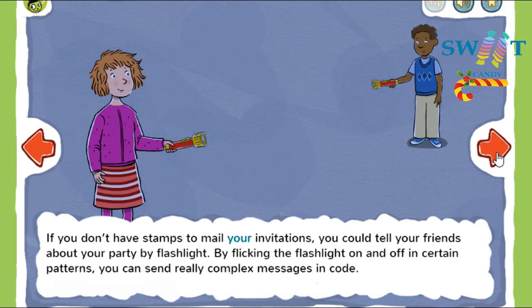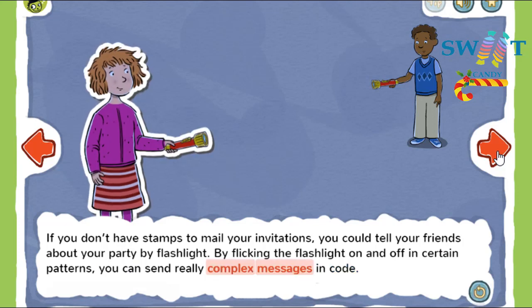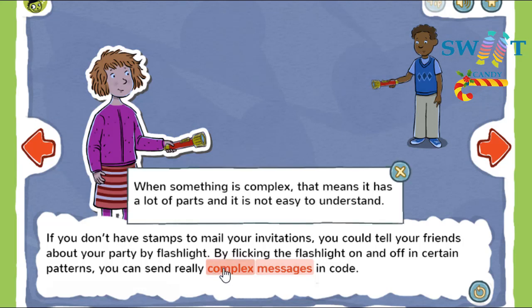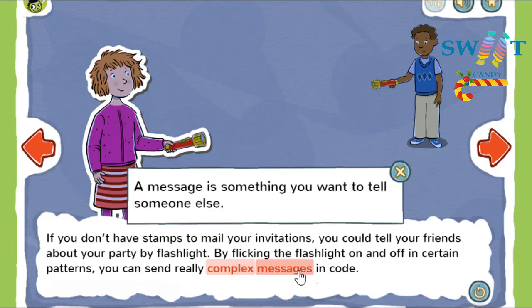If you don't have stamps to mail your invitations, you could tell your friends about your party by flashlight. By flicking the flashlight on and off in certain patterns, you can send really complex messages in code. When something is complex, that means it has a lot of parts and is not easy to understand.